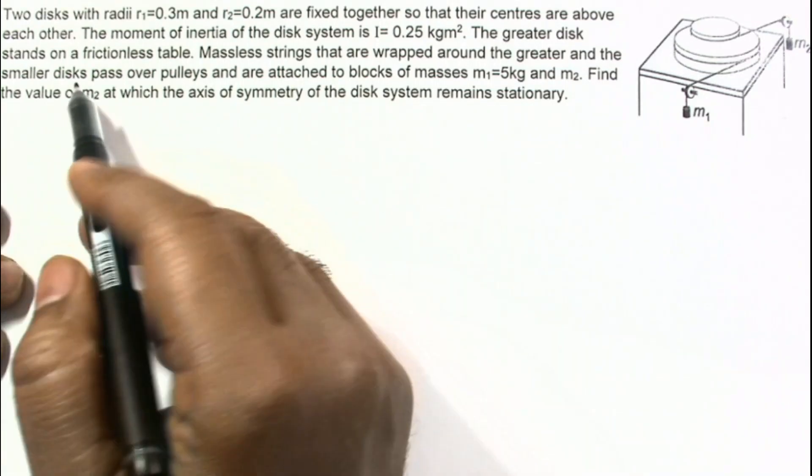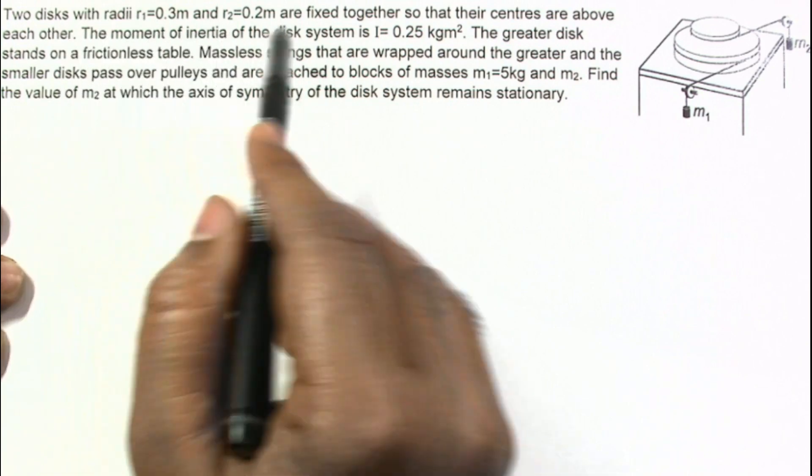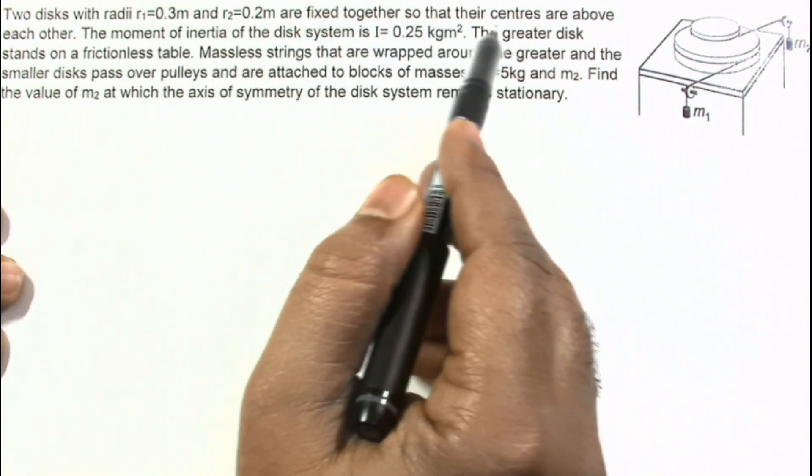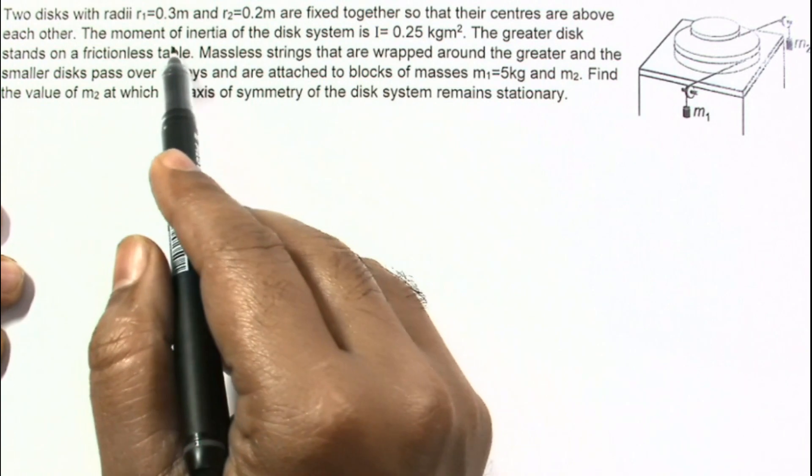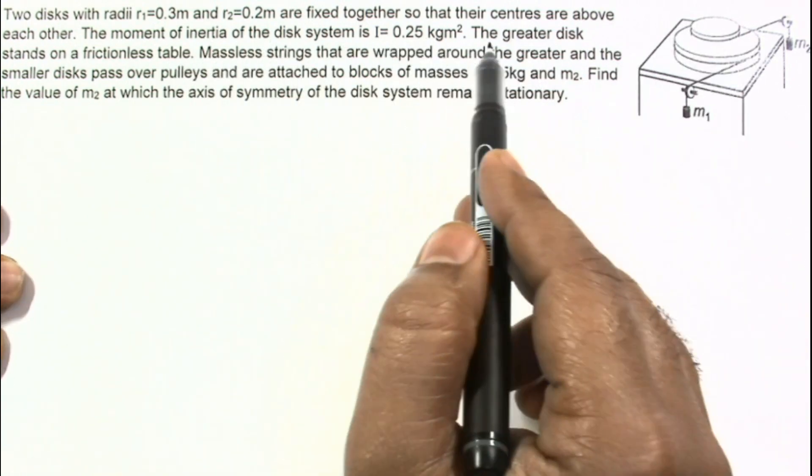Let us discuss a problem in rotational mechanics. We are given two discs with radii R1 and R2 that are fixed together so that their centers are above each other. The moment of inertia of the disc system for this complete system, I, is given.